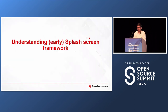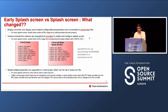Now we'll go through the details of understanding the splash screen framework and see what changed with early splash screen. For splash screen, you need to enumerate display controller and display panel related configuration parameters — like video timing and frame buffer related information — in the device tree files. For early splash screen, you don't need to add any new node; you just need to add a property called bootph-pre-ram, which tells U-Boot that these nodes are applicable at the SPL stage too.